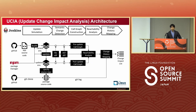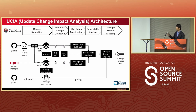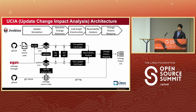Here shows our architecture. Our prototype is implemented in Python script with a Jenkins pipeline. It consists of five stages: update simulation, semantic change detection, code graph construction, reliability analysis, and change history mapping.